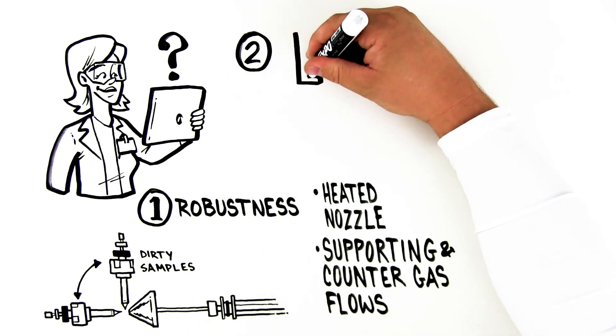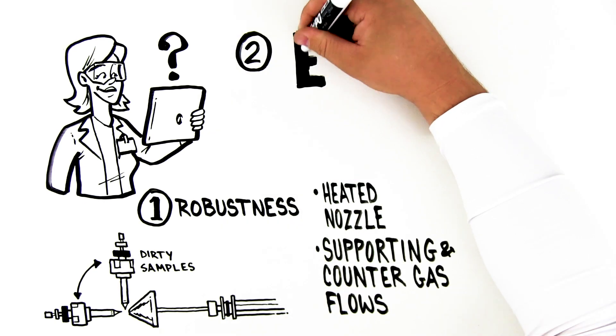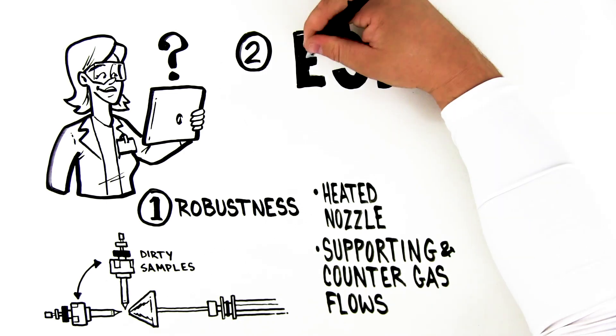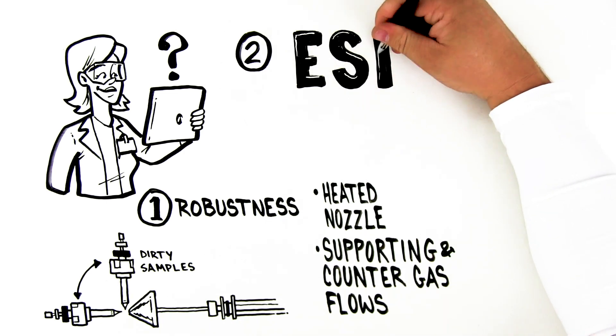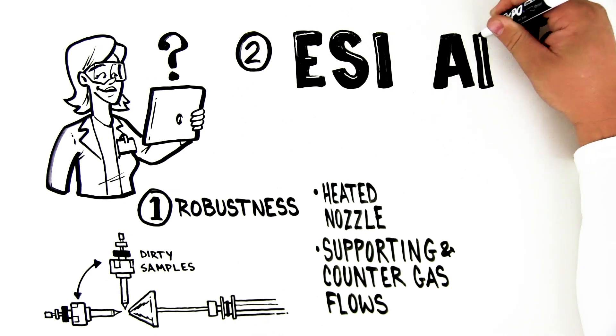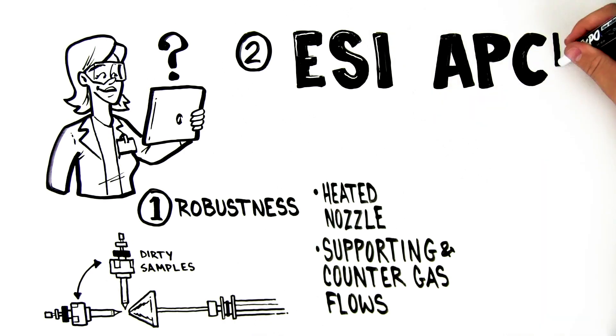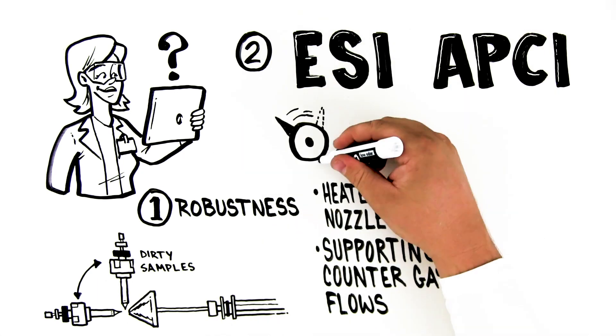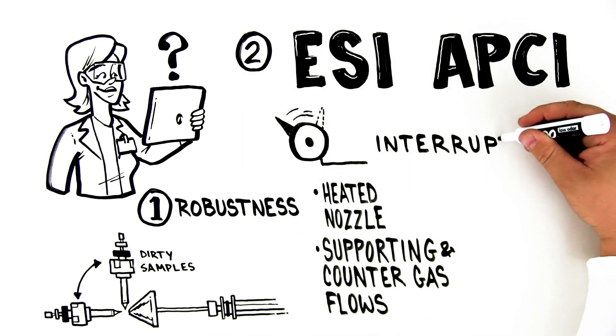Second, the compounds that can be detected depends on the ion source. Electrospray ionization is suitable for polar, relatively labile compounds. Atmospheric pressure chemical ionization is suitable for low or medium polarity compounds. An instrument that allows easy switching between these helps Jenny prevent workflow interruptions.